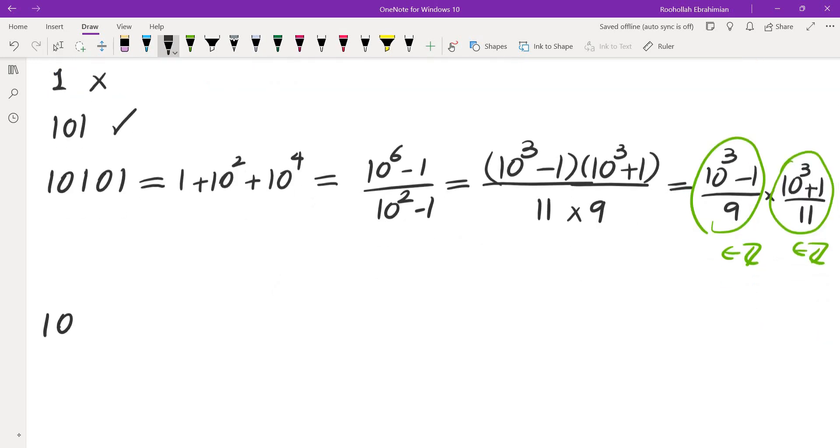So, let's look at the general case. If I have 1, 0, 1, 0, 1, 0, and so on, this would be 1 plus 10 squared plus 10 to the 4th all the way to 10 to the 2n. For some positive integer n, this would be 10 to the power of 2n plus 2 minus 1 over 10 squared minus 1.